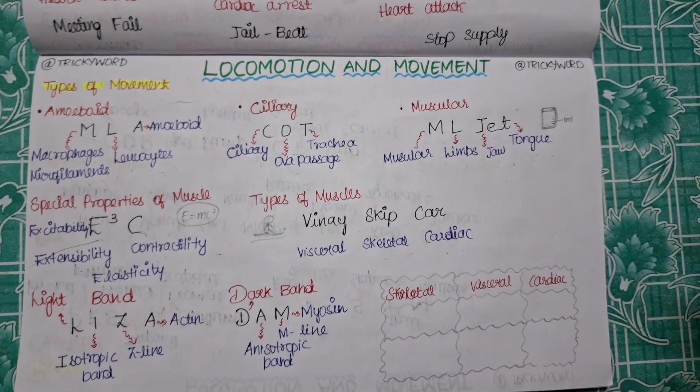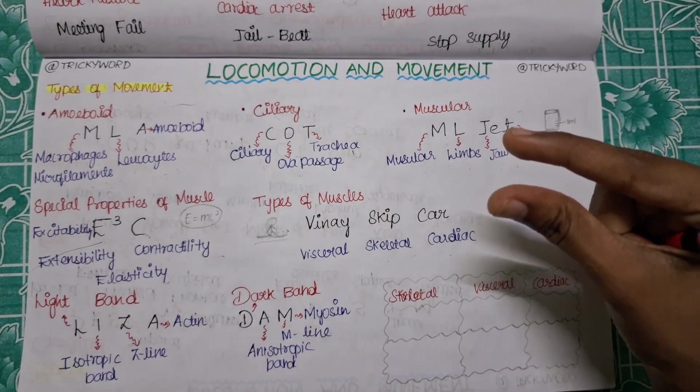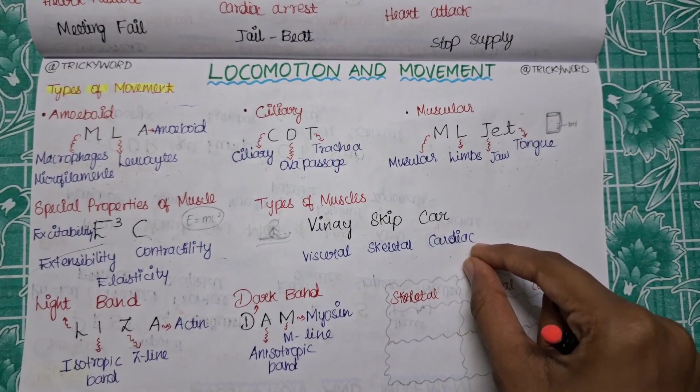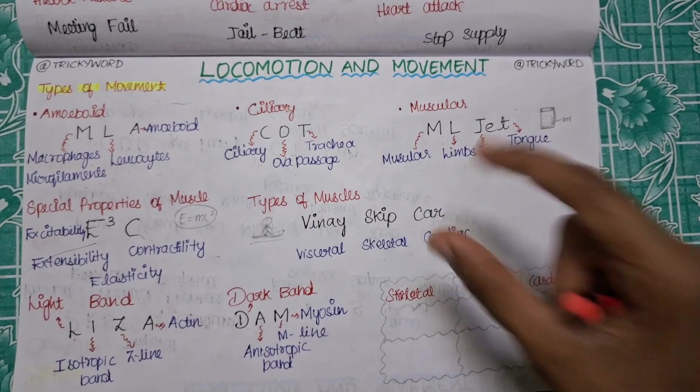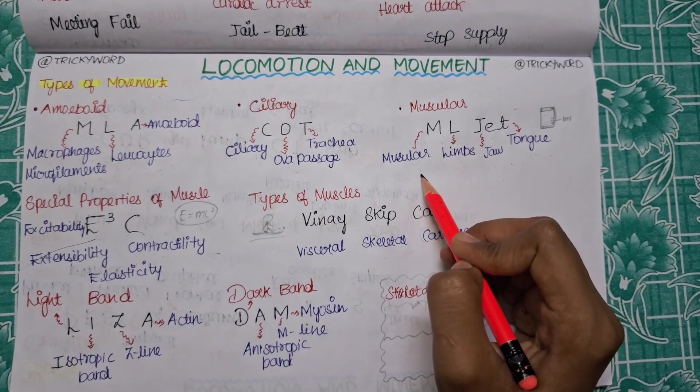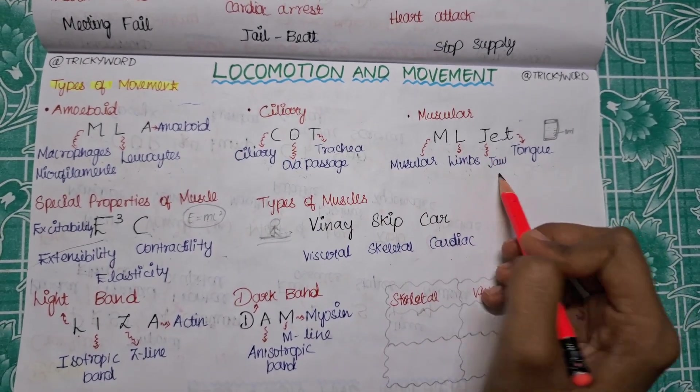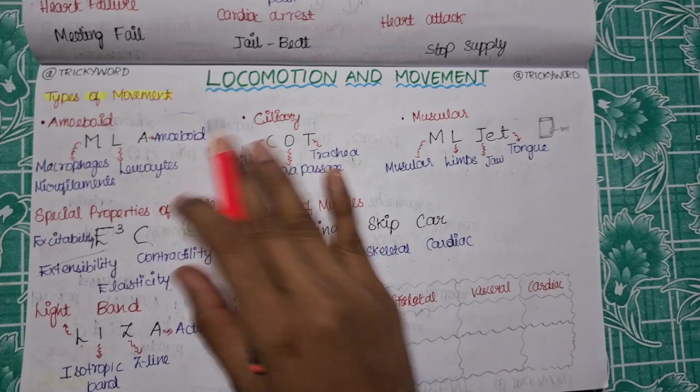For muscular, when you see a jet from earth it will be very tiny, it will be in ML size. Think like that. So you are seeing a jet and it is of ML size, so we are saying ML jet. ML for muscular, L for limbs, J is for jaw, and T for tongue.